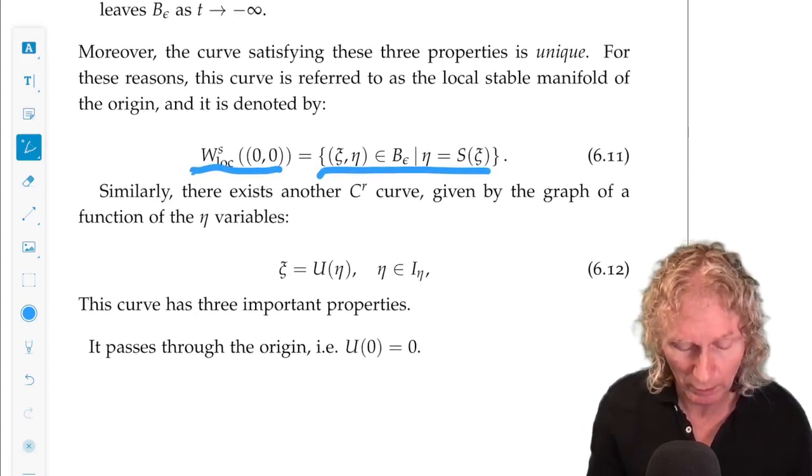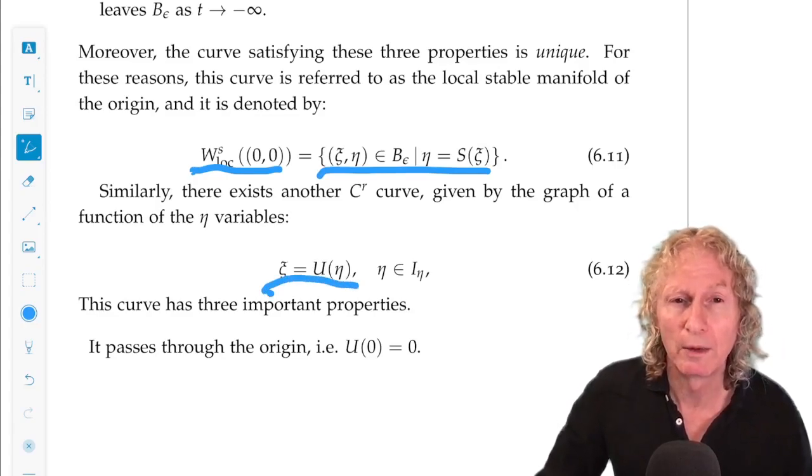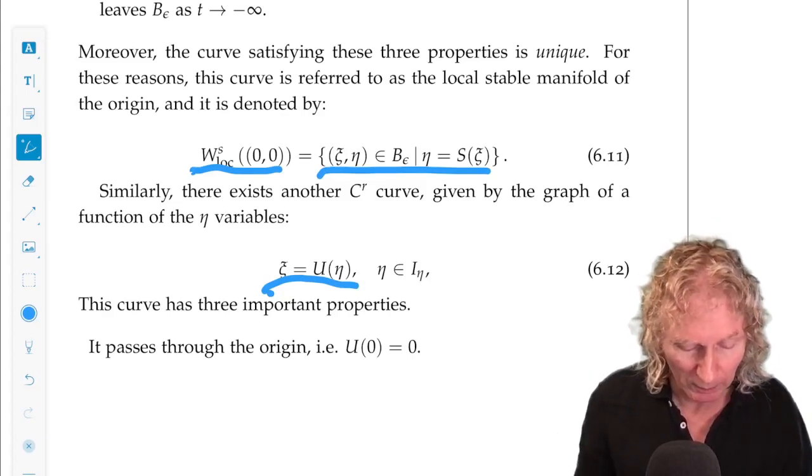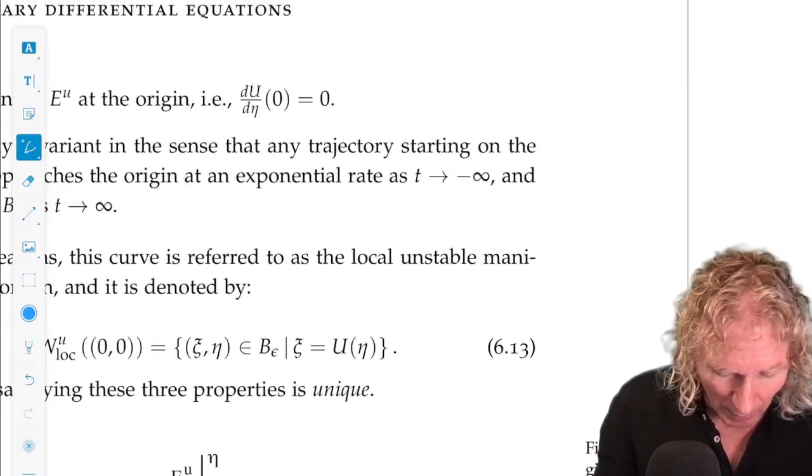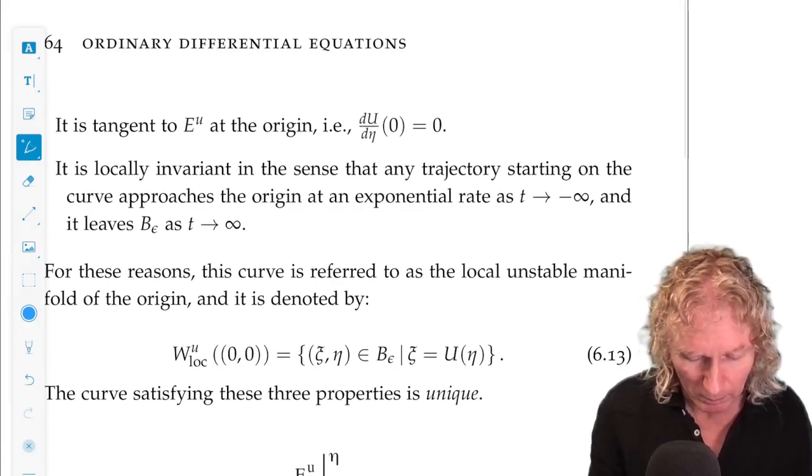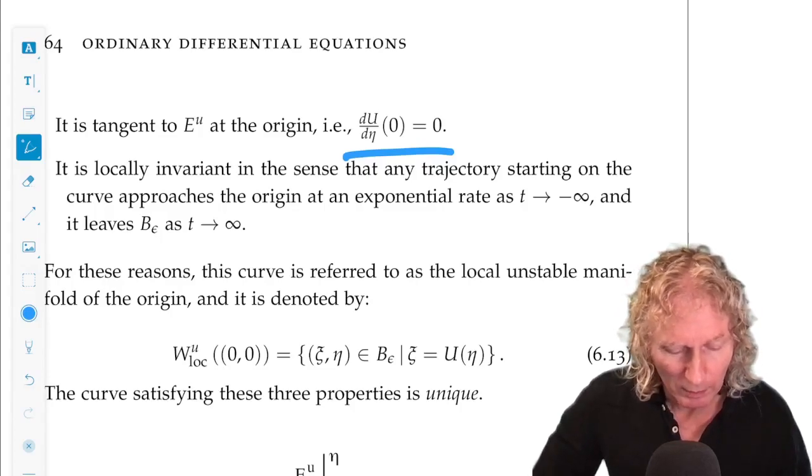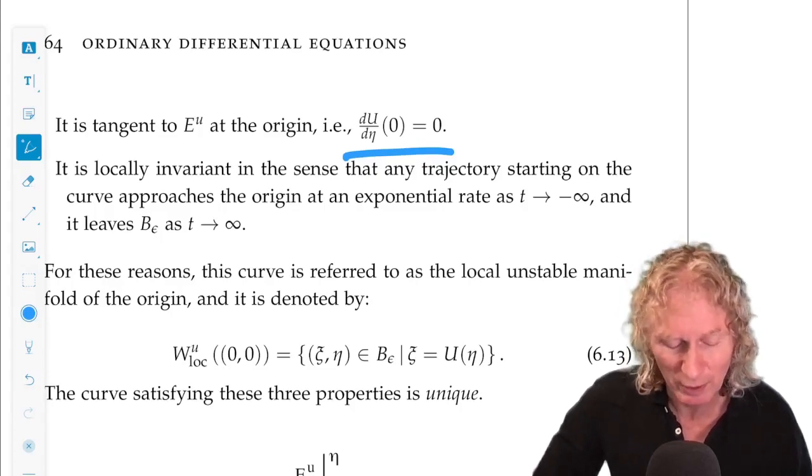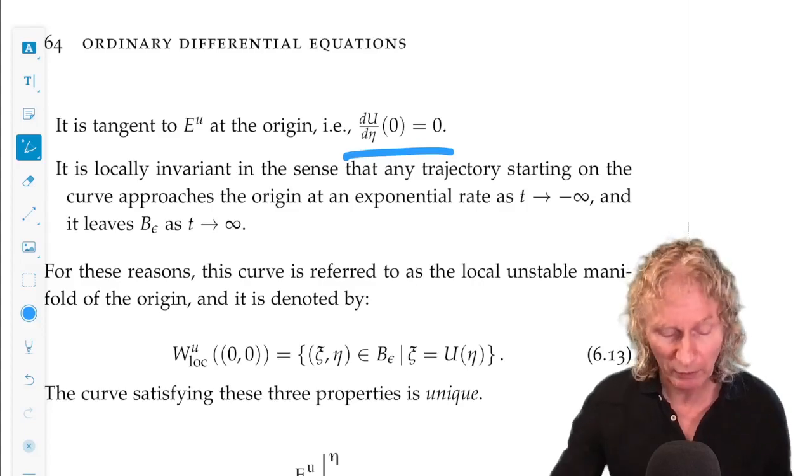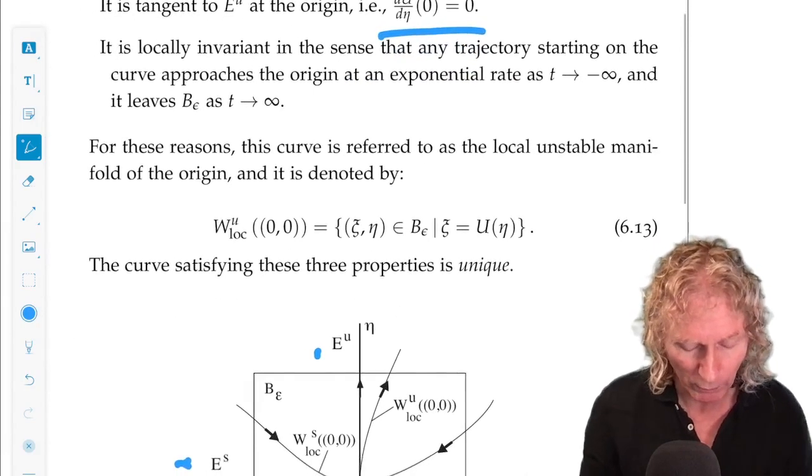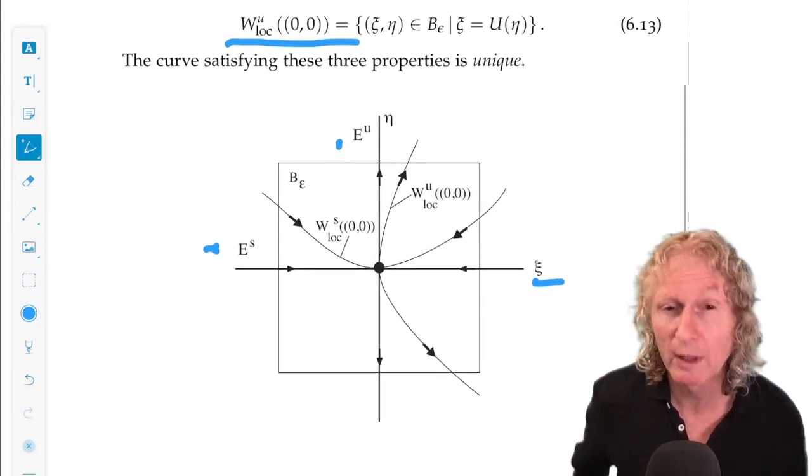Now, there's another curve, C^r curve, ξ = U(η). A graph over the unstable subspace. It passes through the origin. It's tangent to the unstable subspace at the origin. And it's locally invariant in the sense that any trajectory starting on the curve stays on the curve, and approaches the origin at an exponential rate as T goes to minus infinity. And it leaves the box as T goes to plus infinity. And we refer to this as the local unstable manifold.